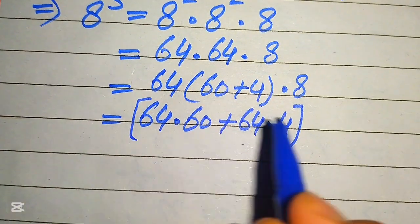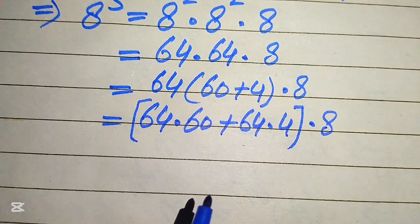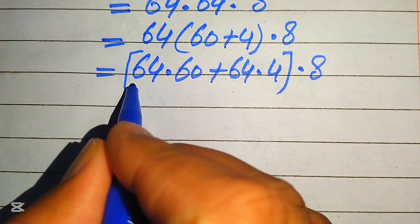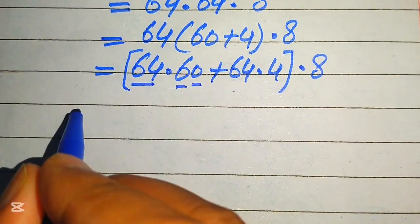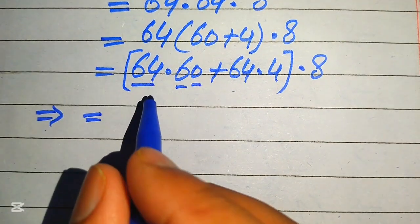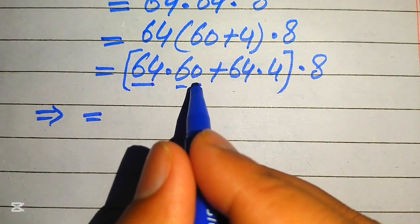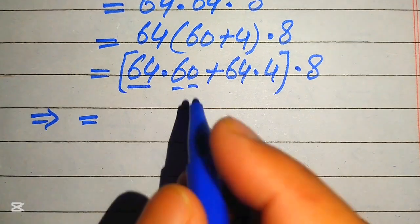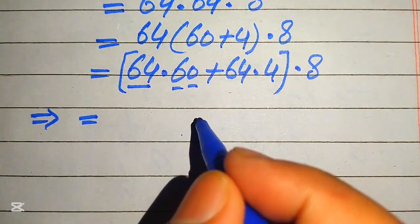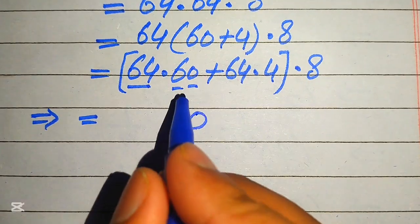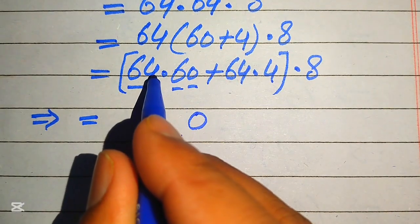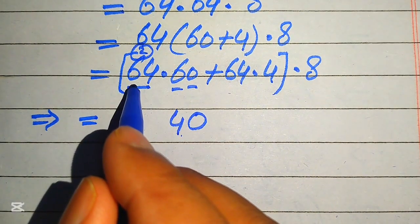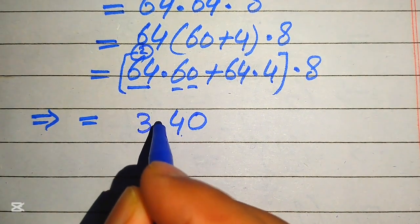First, we compute 64 times 60. Multiplying 0 by 64 gives 0. Then 6 times 4 is 24 — write 4, carry 2. 6 times 6 is 36, plus 2 gives 38. So 64 times 60 equals 3840.